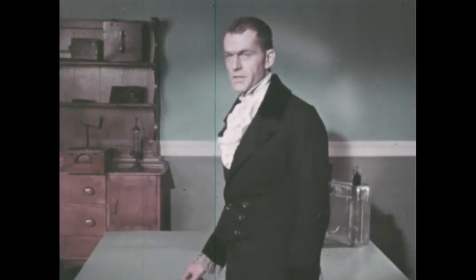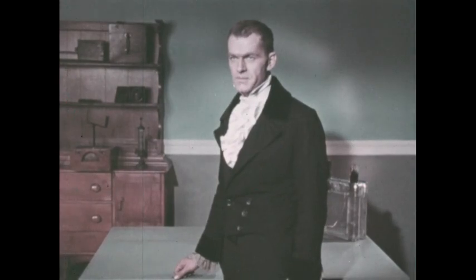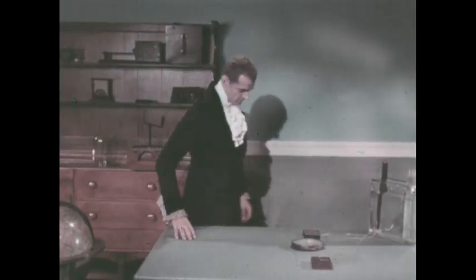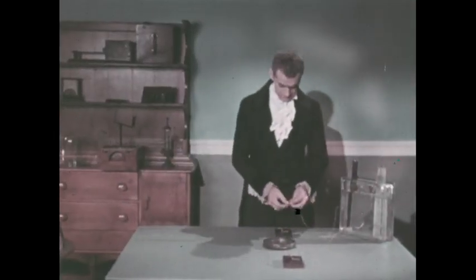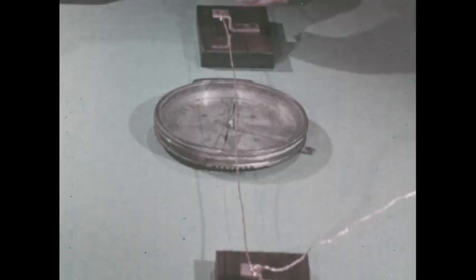This was demonstrated in 1820 by Hans Oersted, a Danish teacher. He placed a wire over a compass. When he sent an electric current through the wire, the needle turned until it was at right angles to the wire. The current had created a magnetic field around the wire.